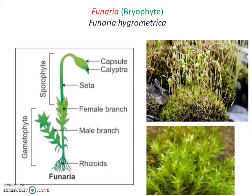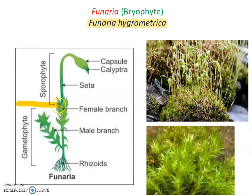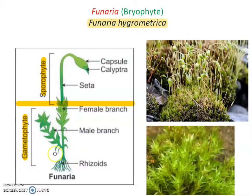Funaria is a genus of Bryophyte, for example Funaria hygrometrica. This is the gametophyte and sporophyte structure of Funaria. In Funaria, the plant is divided into two generations: gametophyte and sporophyte. This part is gametophyte and this part is called as sporophyte. Gametophyte produces gametes, meaning male and female sex organs in this part, and in the sporophyte part there is only formation of spores, so it is called as sporophyte.